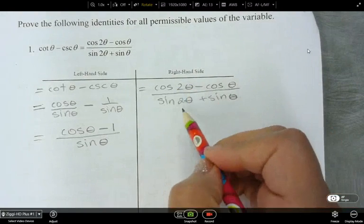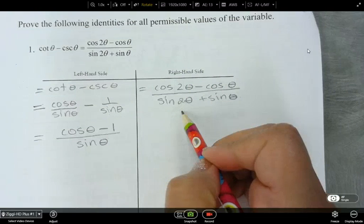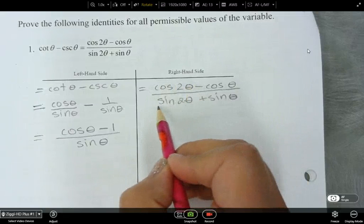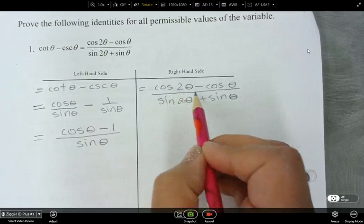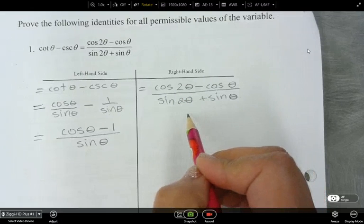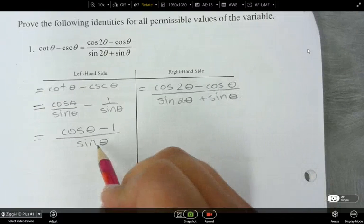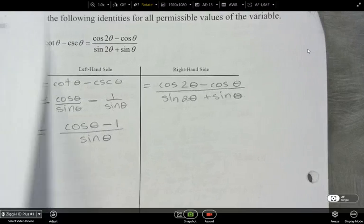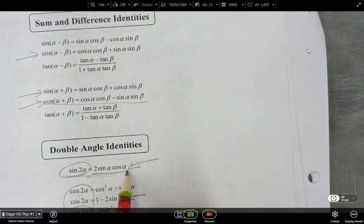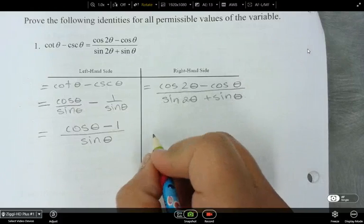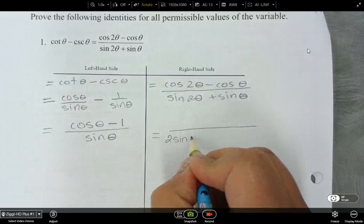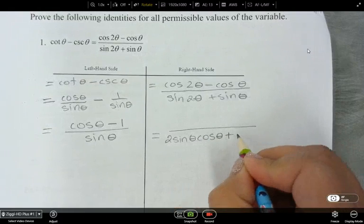Okay, so we notice a couple of double-angle trigs here. Let's see if we can work with them. What can I change this cos 2 theta as? And at the same time, I want to think, what can I change the sin 2 theta as? And my goal here is to see if I can end up with a sine theta. So sin 2 theta is 2 sine theta cos theta. So this is just the denominator right here. 2 sine theta cos theta, and then plus sine theta.